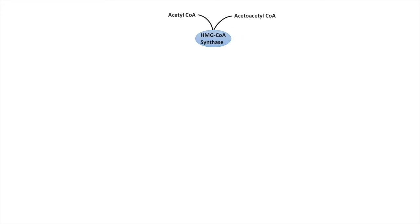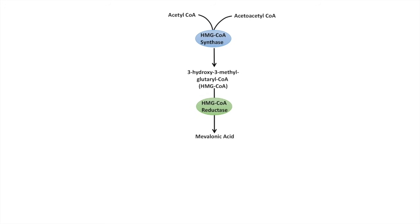The two beginning precursors in cholesterol synthesis are acetyl-CoA and acetoacetyl-CoA. They come together via the enzyme HMG-CoA synthase to produce 3-hydroxy-3-methylglutaryl-CoA, or HMG-CoA. HMG-CoA can be used for a couple of different pathways. If it's in the mitochondria, it can be used to produce ketone bodies in the liver. But if it's in the cytosol, it undergoes a reaction by the enzyme HMG-CoA reductase to produce mevalonic acid. HMG-CoA reductase is the critically important enzyme in the cholesterol synthesis pathway.